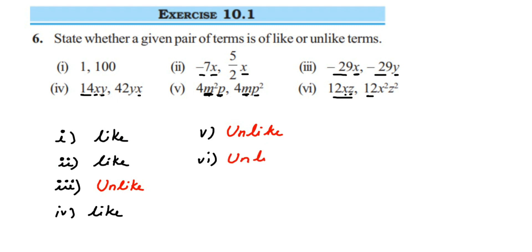To summarize: when checking like and unlike terms, do not consider the numerical coefficient. Check the algebraic factor — the variable part — and also check if the powers are equal. I hope this question is clear. If you have further questions or doubts, you can drop a comment. Thank you so much for watching.